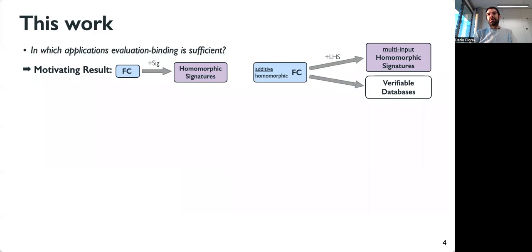This gives a new paradigm for building these homomorphic signatures because the homomorphic signature would support the same class of functions supported by the functional commitment. Also, if a commitment is additive homomorphic, it's also updatable, and this yields other applications.